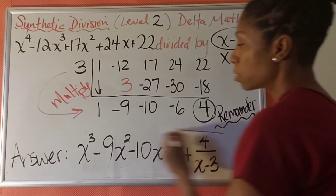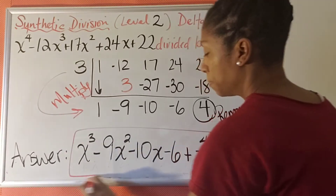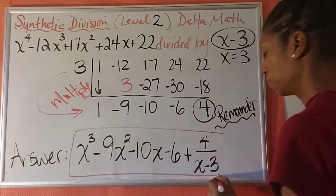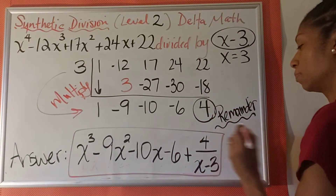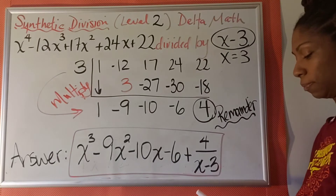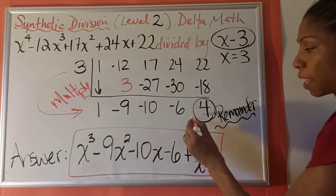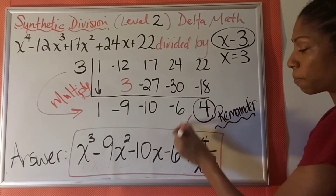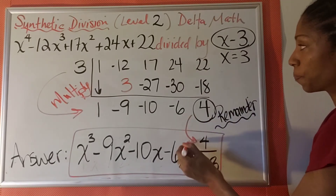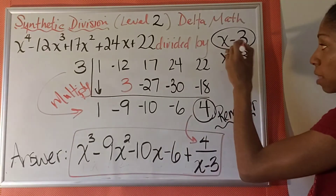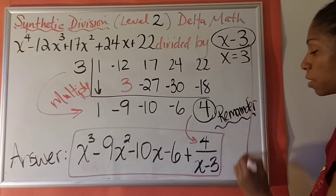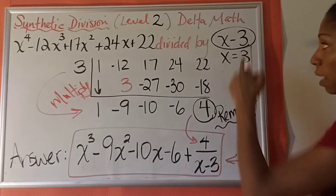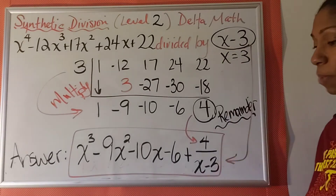So that's my answer everybody. That 4 came from our remainder, and the x minus 3 came from that binomial.